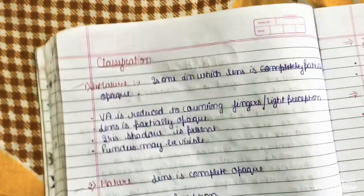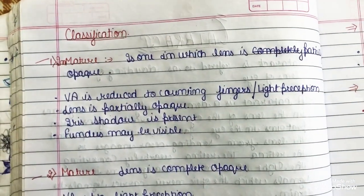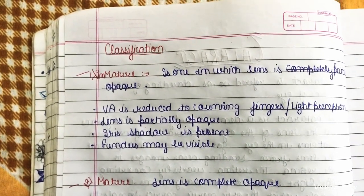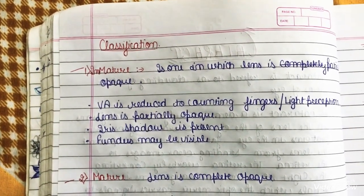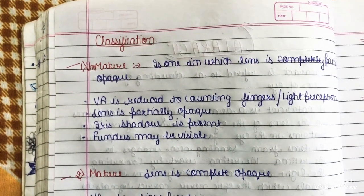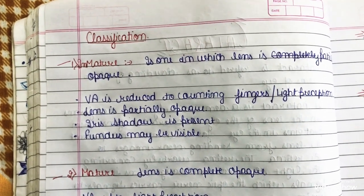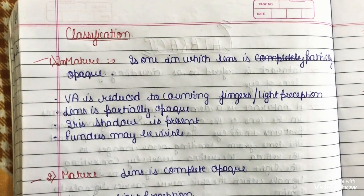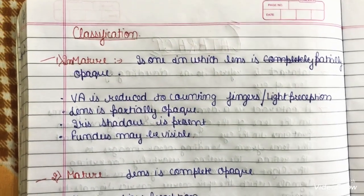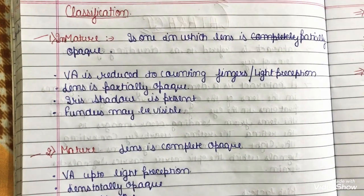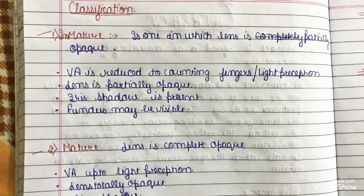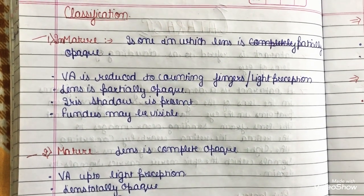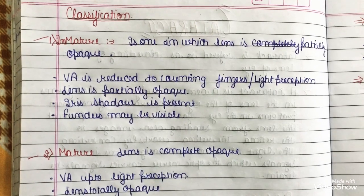The classification of cataract has four types: immature, mature, hypermature, and Morgagnian. In immature cataract, the lens is partially opaque. Visual acuity is reduced to light perception or counting fingers. The iris shadow is present and the fundus may still be visible.